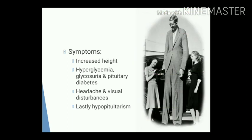The person also has hyperglycemia and glycosuria, known as pituitary diabetes. This is caused because growth hormone leads to excessive insulin secretion and overactivity of the beta cells of the pancreas, which ultimately results in degeneration and exhaustion of the beta cells, and therefore deficiency of insulin and diabetes mellitus. Other features are headache and visual disturbances.